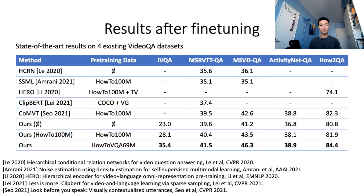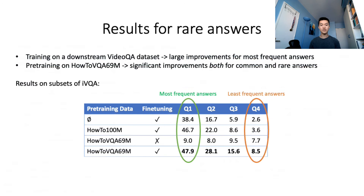We now evaluate our pre-trained model after fine-tuning on downstream video QA datasets. We find that our model significantly improves over the same architecture trained from scratch or pre-trained on HowTo100M. It also achieves state-of-the-art on MSRVTT-QA, MSVD-QA, ActivityNet-QA, and HowToQA. Our approach brings significant improvements both for common and rare answers compared to models trained from scratch or pre-trained on HowTo100M.